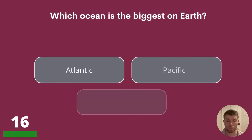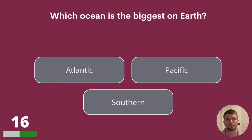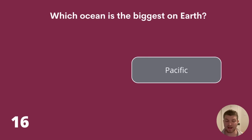Question 16. Which ocean is the biggest on Earth? Atlantic, Pacific or Southern? The biggest ocean on Earth is the Pacific Ocean.